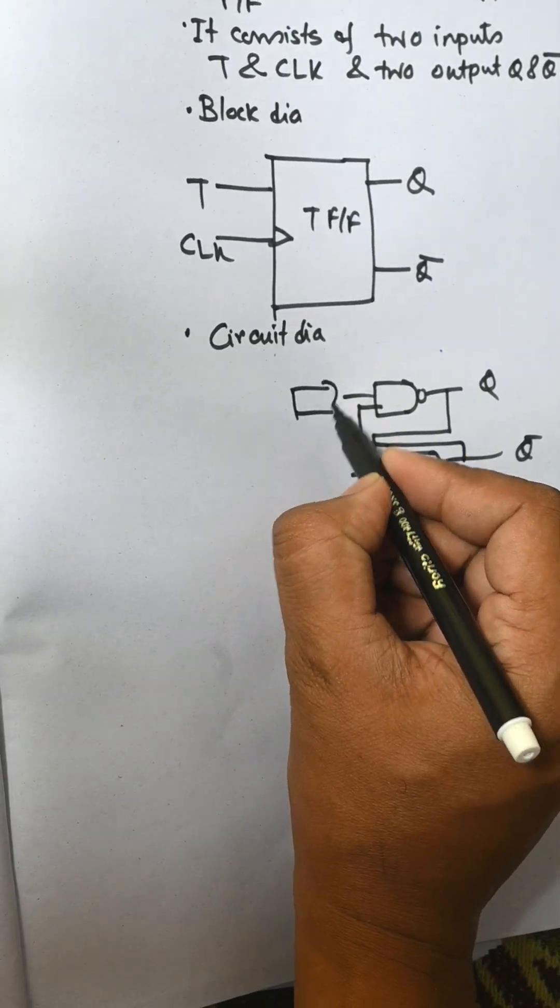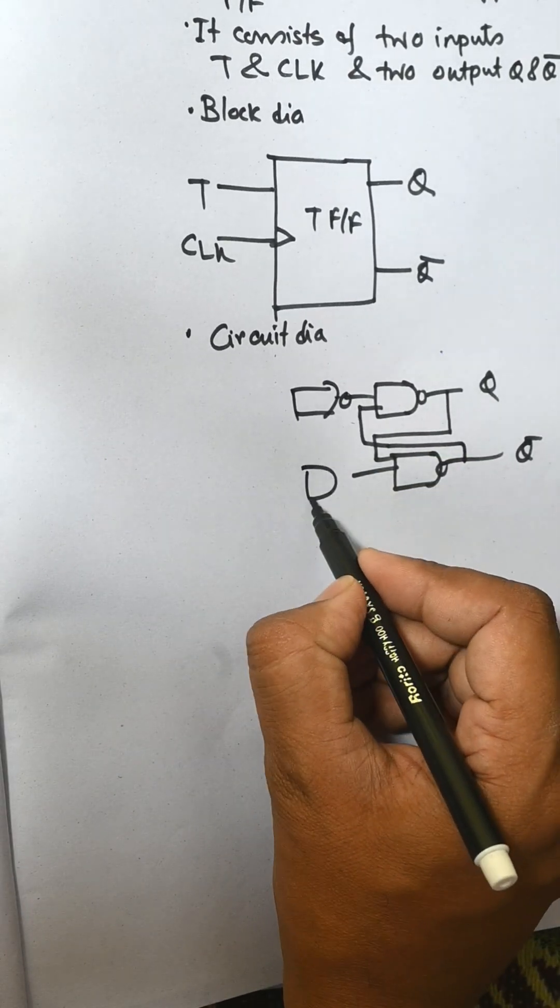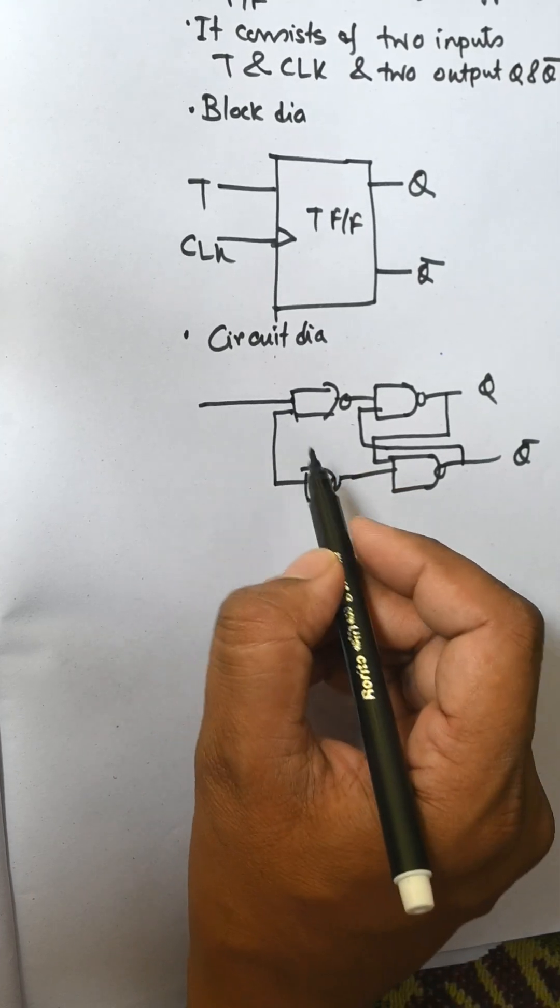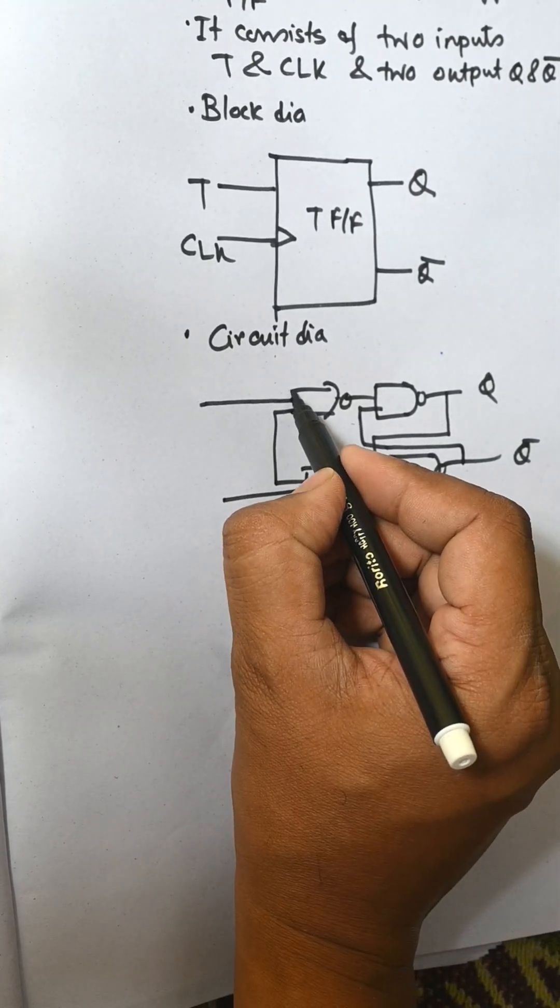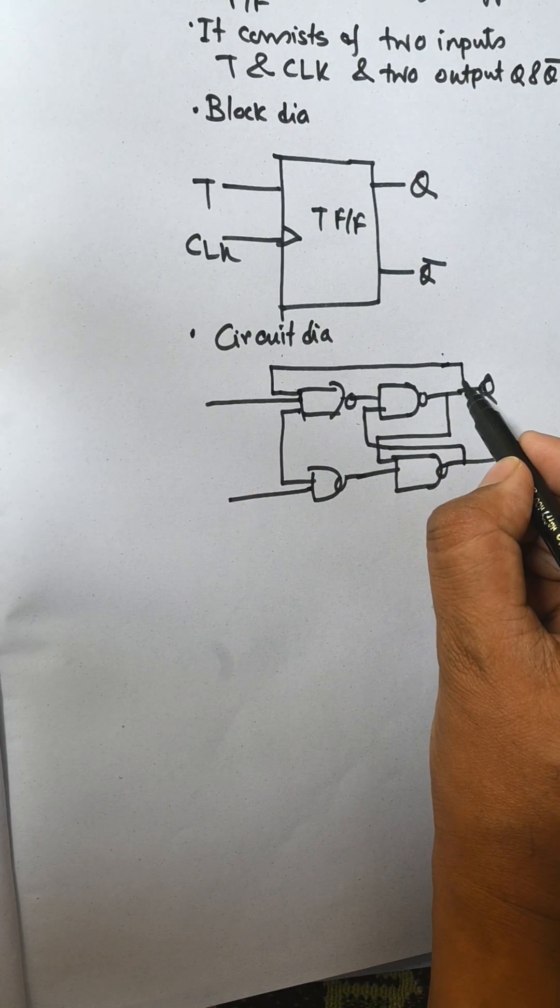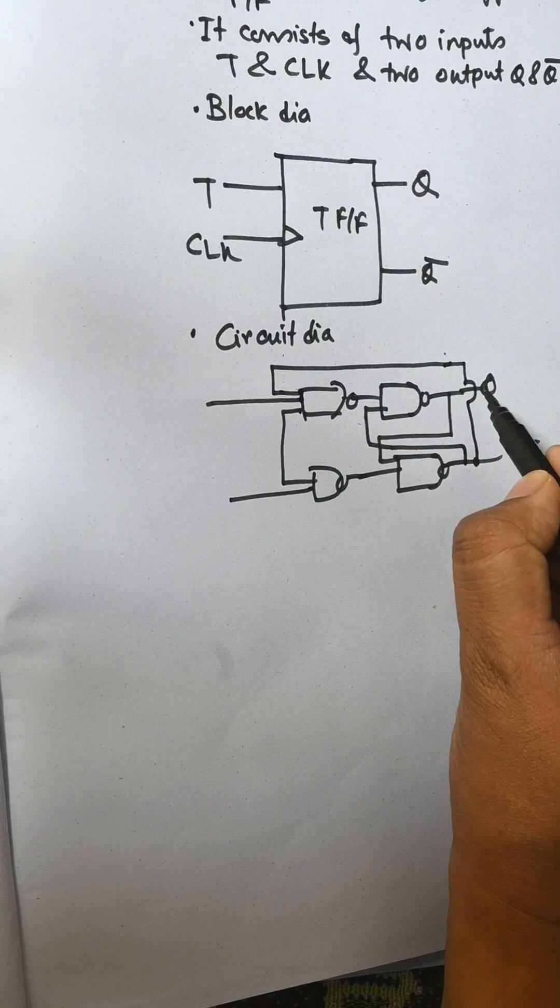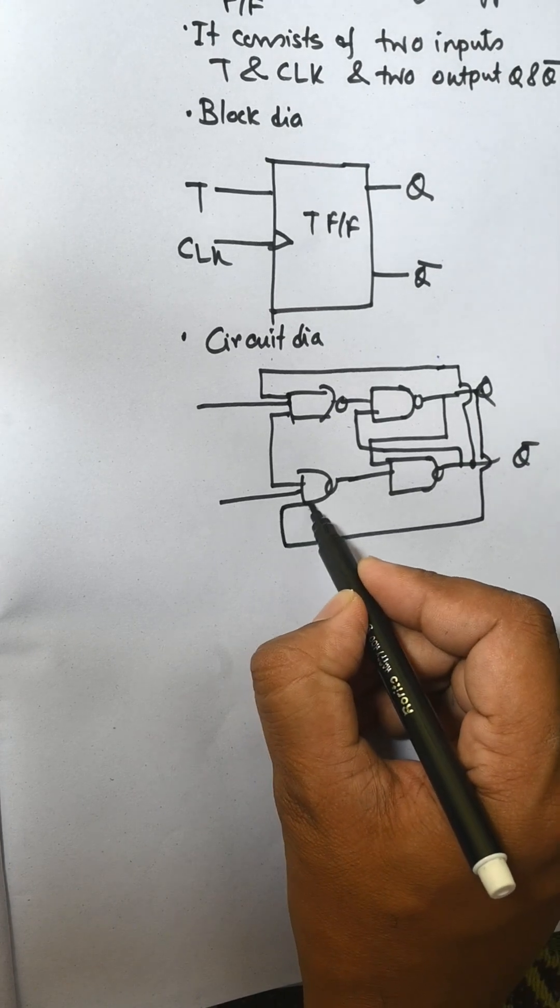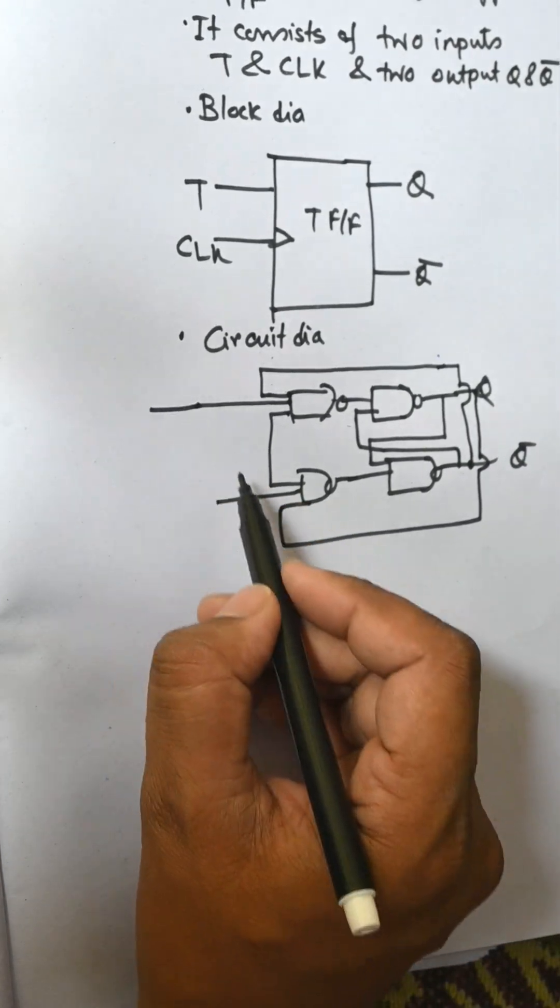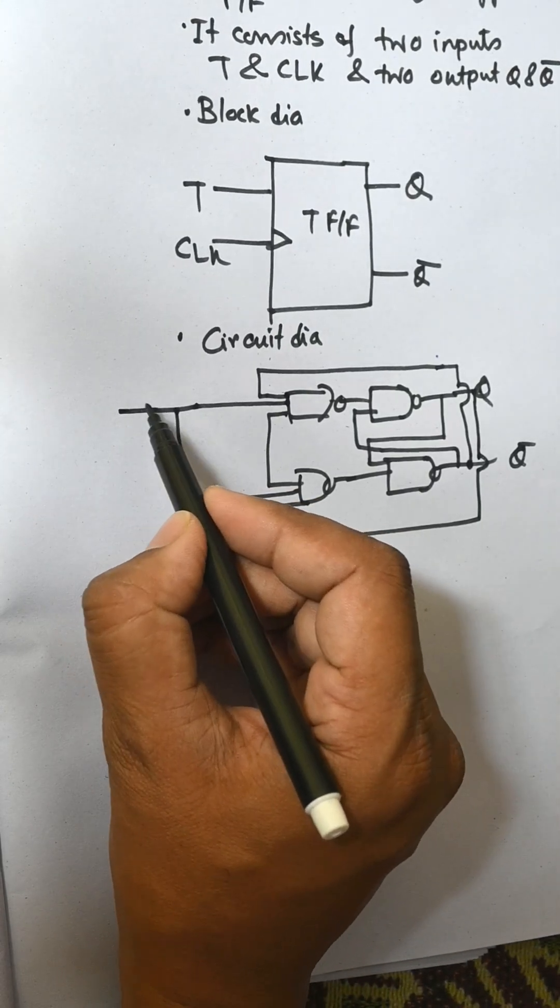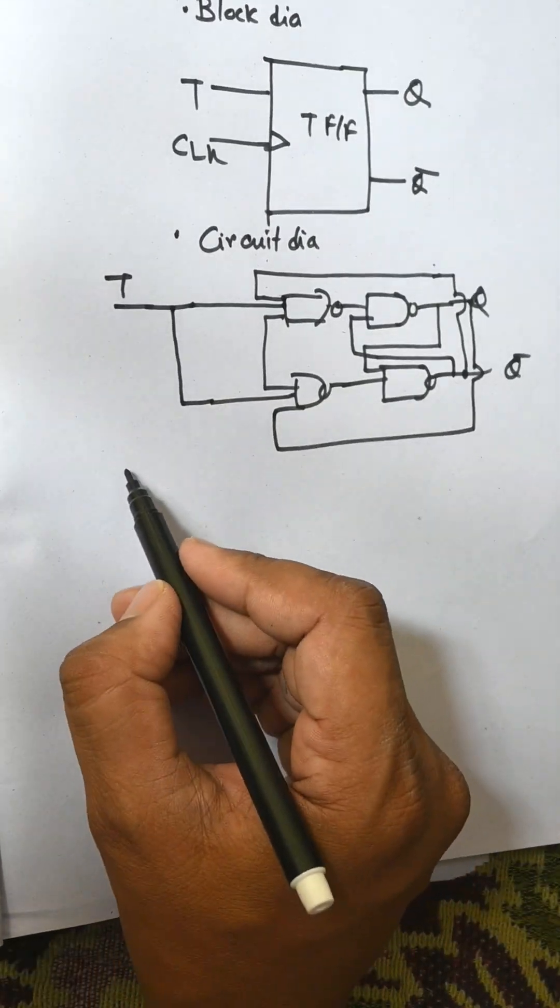Now construct the clocked SR flip-flop. This is CLK, and this is J and this is K. The input of J is connected to Q̄ and Q is connected to K. The outputs of J and K are connected by AND gates, and this one is known as T flip-flop. Now the truth table.